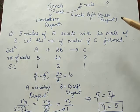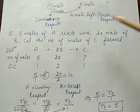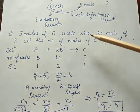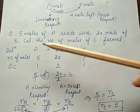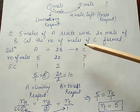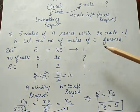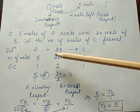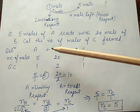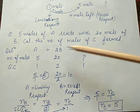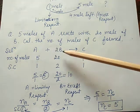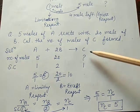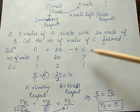Now take one example. 5 moles of A react with 20 moles of B. Calculate the number of moles of C formed. Step number one: write the chemical equation. A plus 2B gives rise to C. This is the reaction given.